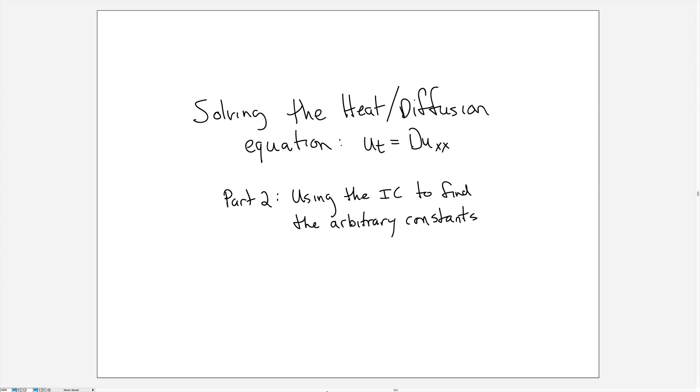Solving the heat or diffusion equation u_t equals u_xx. This video is part 2, using the initial condition to find the arbitrary constants. To see how to find the general solution, refer to part 1.